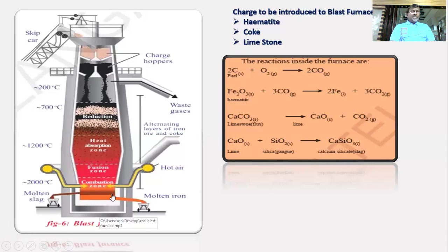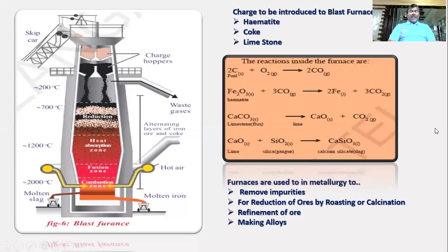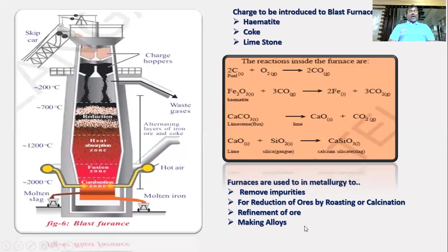Slag forms at the bottom of the blast furnace and is removed through a slag vent; molten iron is also collected at the bottom. The advantages of using furnaces in metallurgy include removing impurities from ores, reduction by roasting and calcination, refinement of ores, and making alloys.